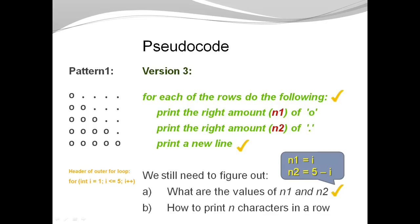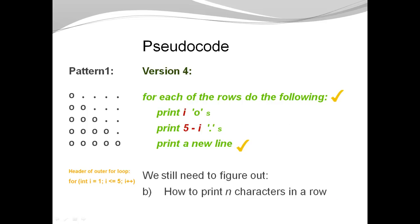And I know that given the header of the outer for loop as counting from 1 to 5, my n1 is i. My n2 is 5 minus i. And now I can write this directly in the steps of my pseudocode. I can say what I need to do is print i circles, print 5 minus i dots, and print a new line.